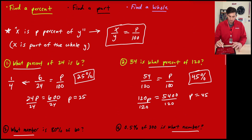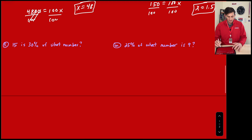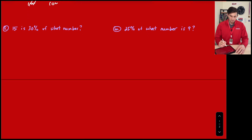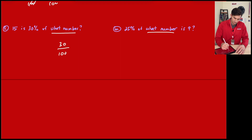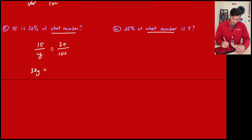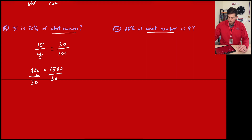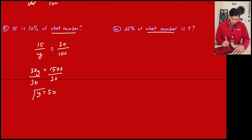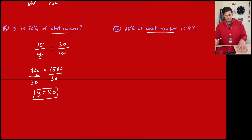Now our last two examples find the whole, which is y. Number five: '15 is 30% of what number?' We have 30 over 100, and 15 is our part — we're finding the whole. Cross multiplying: y times 30 equals 30y, and 15 times 100 equals 1,500. Dividing both sides by 30: 1,500 divided by 30 gives 50. So y equals 50, meaning 15 is 30% of 50.